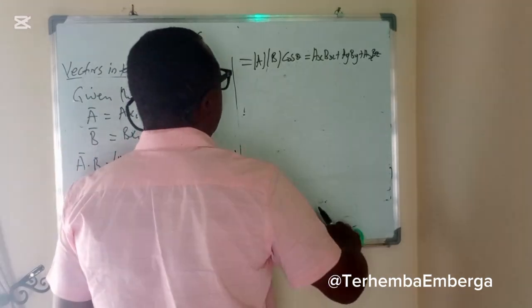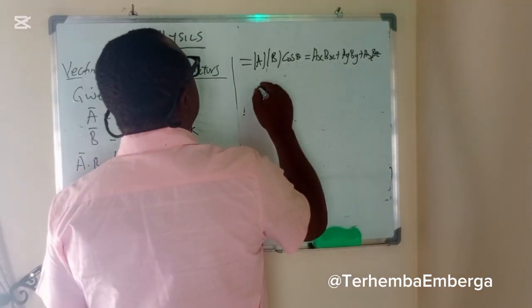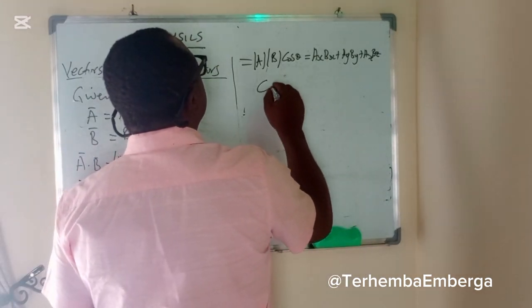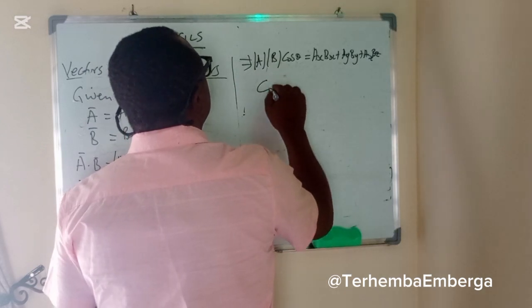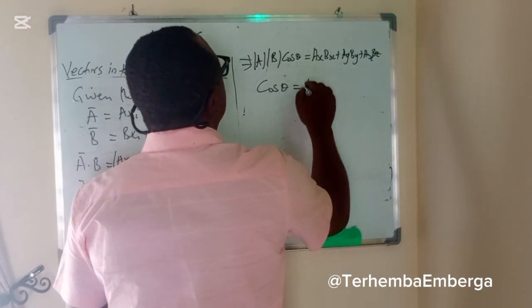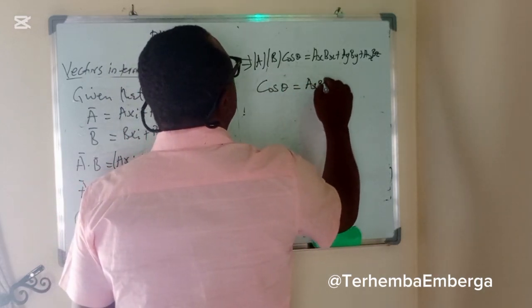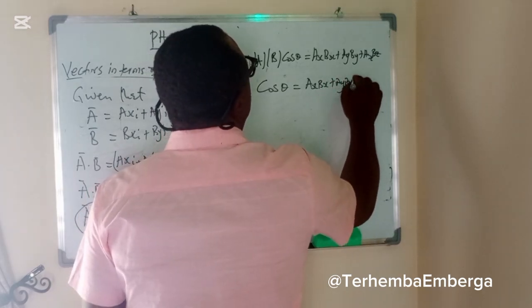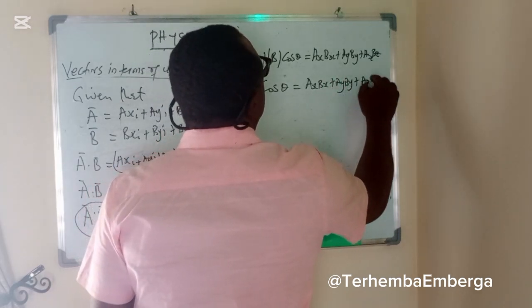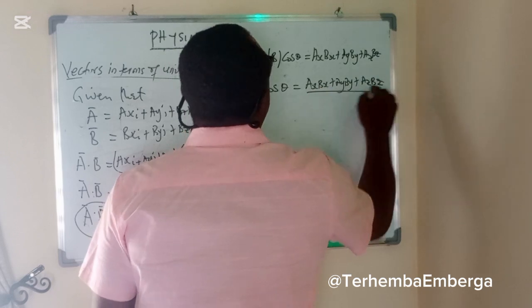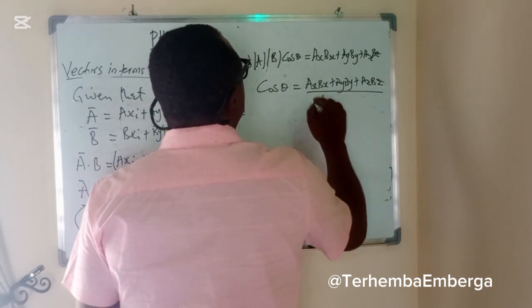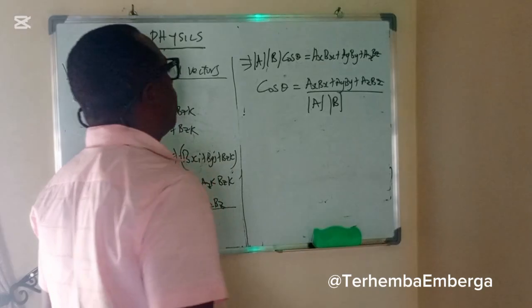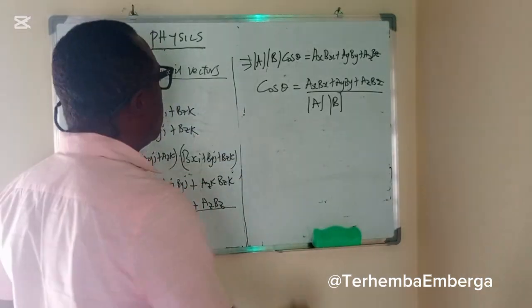In this case, we now have cosine theta will be equal to AX BX plus AY BY plus AZ BZ all by modulus of A modulus of B.